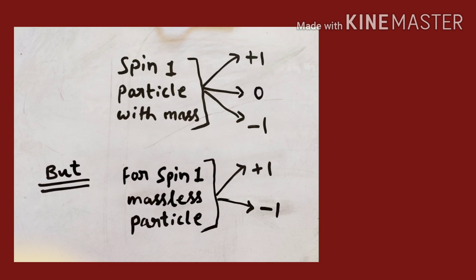An important point: if a particle has spin-1, it doesn't mean it will certainly have all three components. The condition is — if the particle has mass, then it can have all three spin orientations: plus-1, 0, and minus-1. But if the particle is massless, it will have only two orientations, plus-1 and minus-1, and 0 is not applicable.